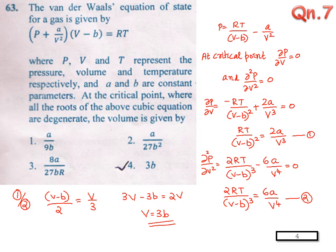Solving equations 1 and 2, we get V minus B by 2 equal to V by 3. So we will get V equal to 3B.